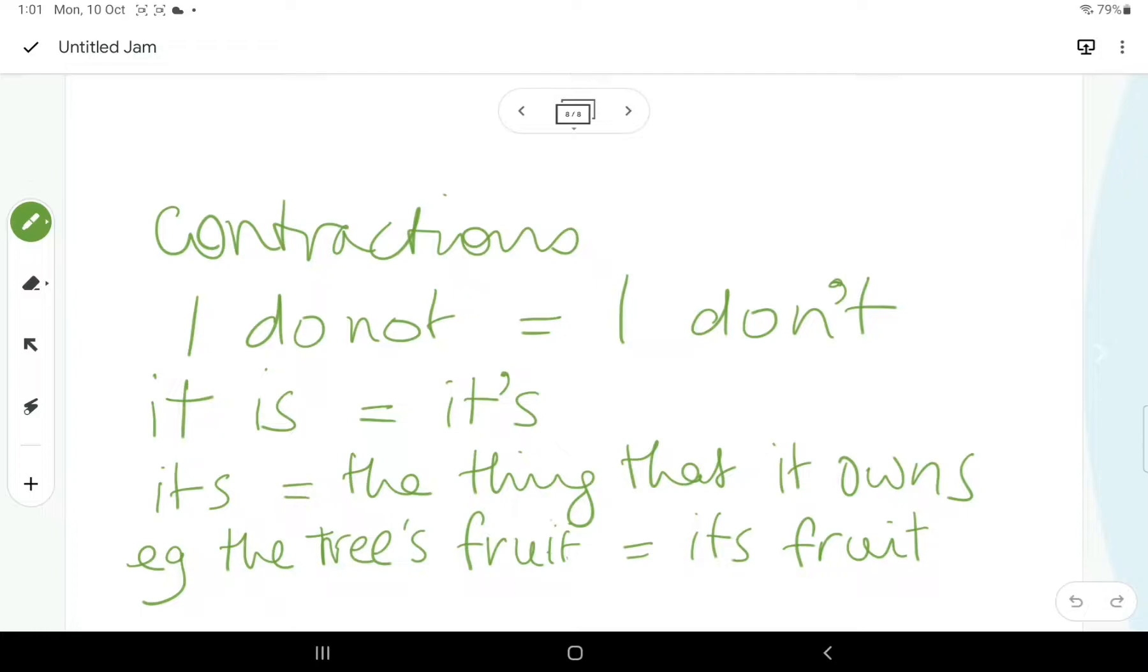We do need them for contractions, though. So, just to clarify what a contraction is, if we've got the words I do not and we want to shorten them, we can say I don't. All we've done is we've taken out the O and we've replaced it with an apostrophe and we've joined these two words together.